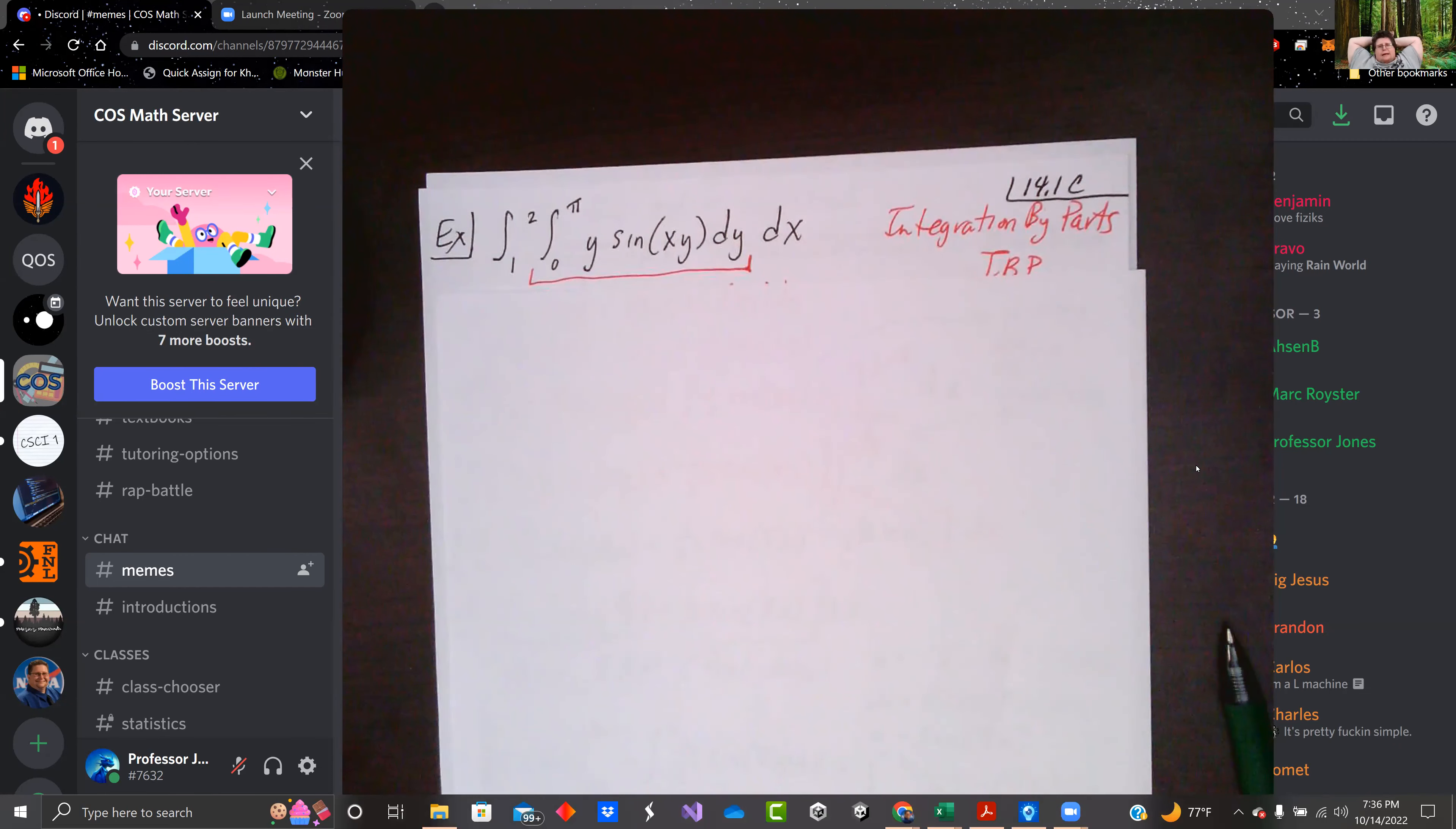Hey, everybody. Welcome back. We're going to do a nasty double integral. We're integrating y times sine of xy. We're going to do from y goes from zero to pi and x goes from one to two.